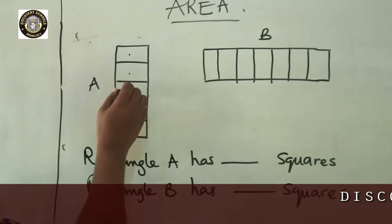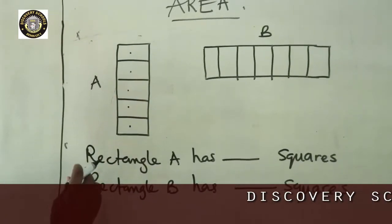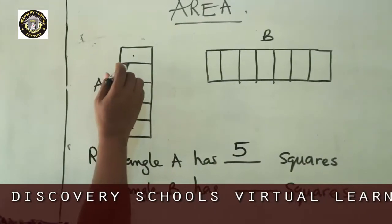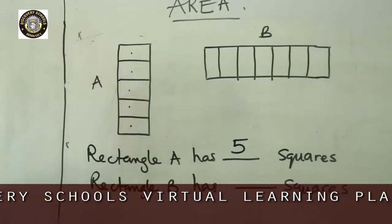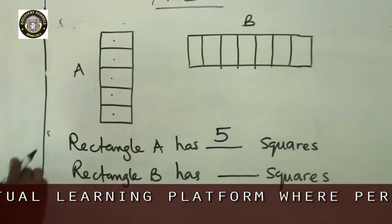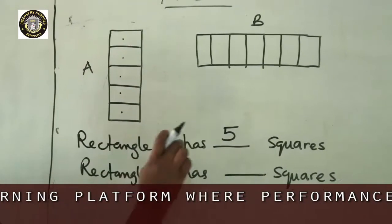1, 2, 3, 4, 5. So rectangle A has 5 squares. Rectangle A has what? 5 squares. So the area of A is what? 5. The area of rectangle A is 5.